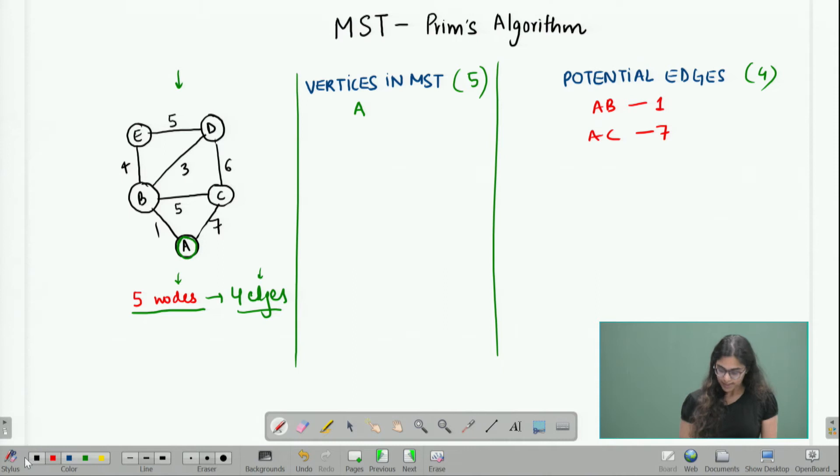So, what I do next is after I have chosen a vertex and after I have added all the edges which have A as the endpoint in my list of potential candidates, I try to choose the minimum out of this list which in this case will be AB because its weight is 1 which is the minimum. So, basically I end up choosing this edge as part of my MST.